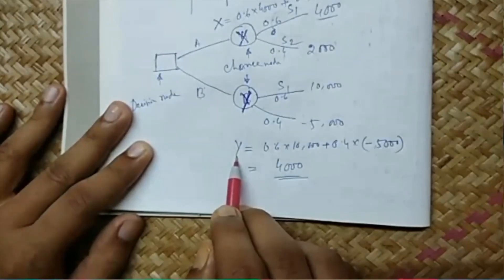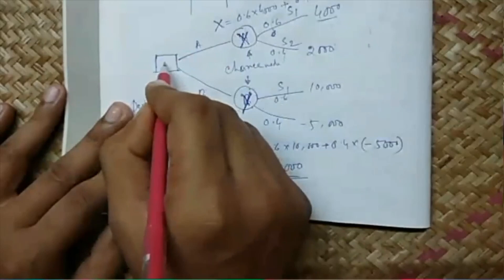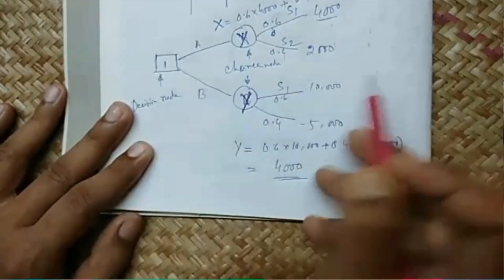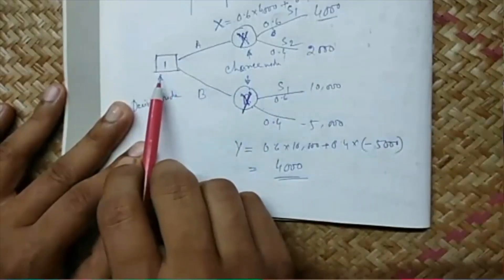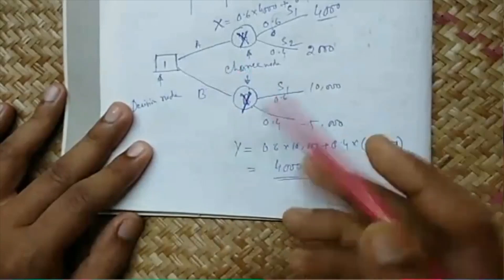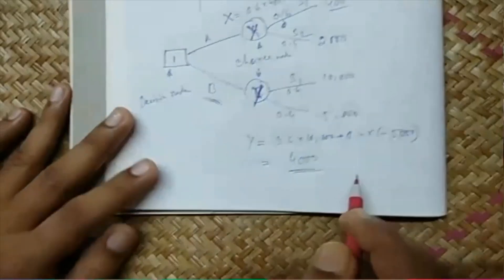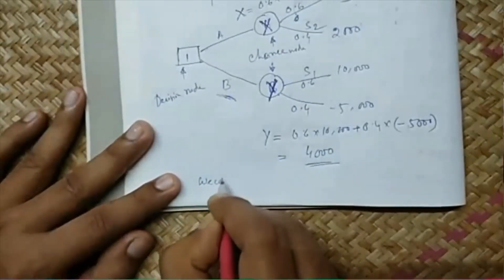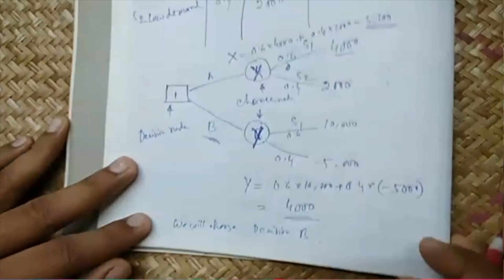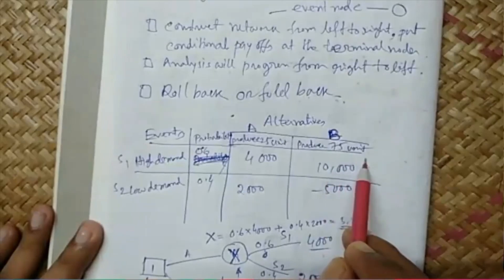We have found out the EMV for both of the nodes X and Y and now we need to take a decision which one we are going to take. Looking at this we can find that EMV for Y yields the maximum value 4000 which is greater than 3200. Because the payoff or the EMV of Y is better, that's why we will choose the decision alternative B. We are numbering this decision node as one. There are two decisions A and B, we have found that for decision B we find maximum payoff, so we will choose decision B, which is produce 75 units. That will be chosen.